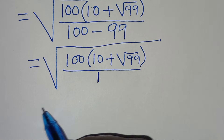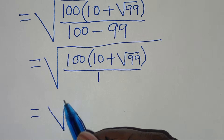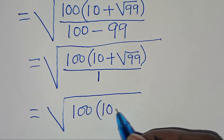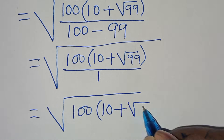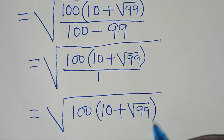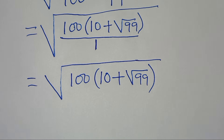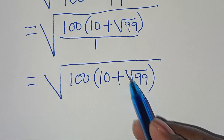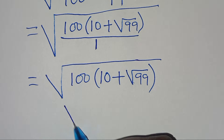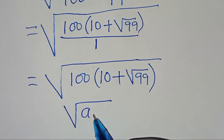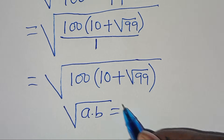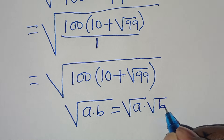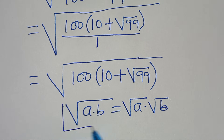The expression now simplifies to square root of 100 multiplied by 10 plus square root of 99. We note that square root of 100 multiplied by something is in the form of square root of a times b, which can be expressed as square root of a multiplied by square root of b.